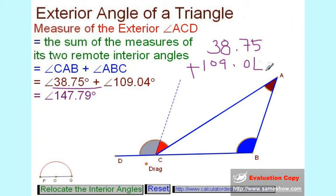109.04 degrees. These two together, if we add them, become 147.79 degrees, which is the measure of the exterior angle ACD.